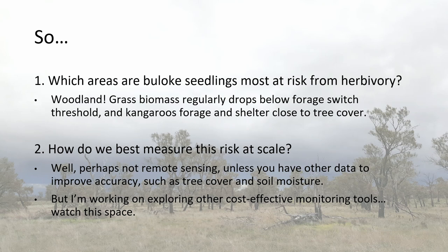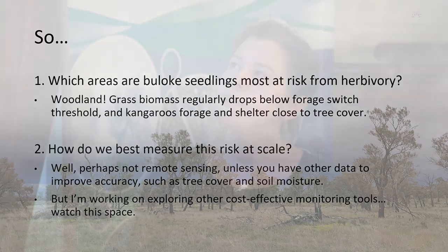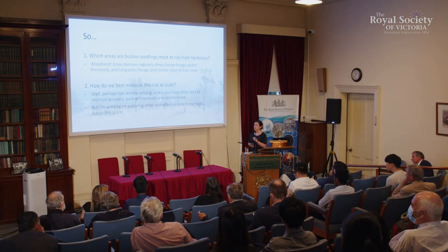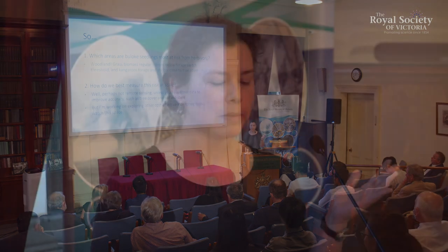How can we best measure this at a large scale? Remote sensing alone is complex unless you include other data such as tree cover and soil moisture to improve accuracy. I'm working on and testing other field methods, such as a rising plate meter — a rod with a small plate that you drop and measure the height — which is quite quick and effective. There's also a handheld scanner that works like a satellite but at a much finer spatial scale, so more accurate but more expensive. And there are pasture models available online, though they're coarser — I'm testing whether they're enough for this purpose. Watch this space.